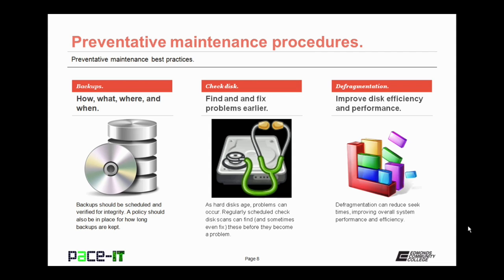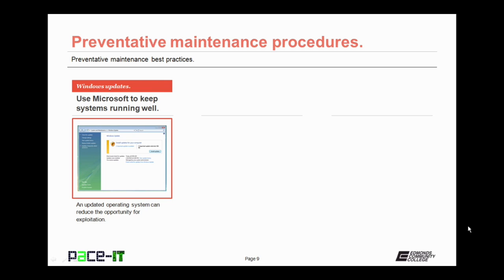You should schedule defragmentation for spinning disk hard drives on a regular basis to ensure optimum performance. Windows Update: you should use Microsoft's Windows Update to keep the system running well. An update to an operating system can reduce the opportunity for exploitation, and you do have the option for when Windows updates occur and how they occur. You should develop a policy for how you're going to handle them.